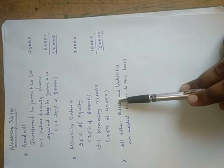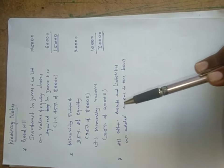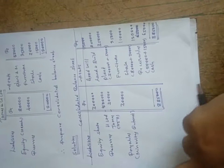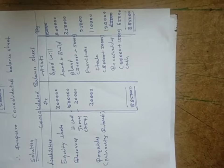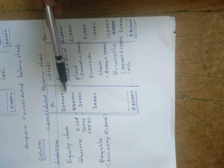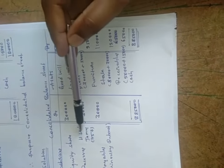The third condition: all other assets and liabilities are added on a one-to-one basis except equity in the consolidated balance sheet. So for equity shares, 3 lakh is taken as-is, because all assets and liabilities are added on a one-to-one basis except equity. Equity in H India Limited is 3 lakh directly in the consolidated balance sheet. Reserves in H India Limited are 5 lakh.